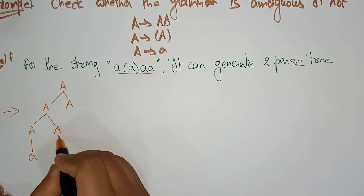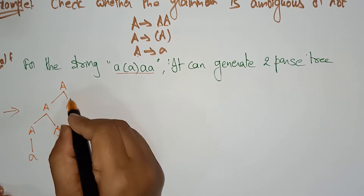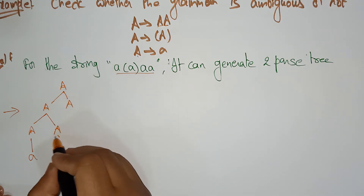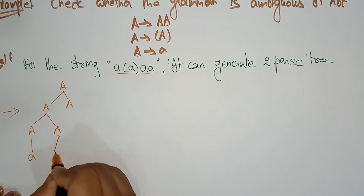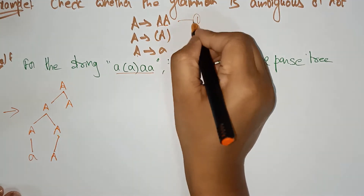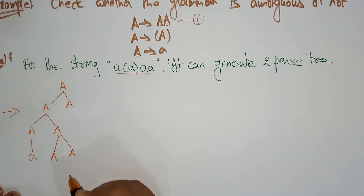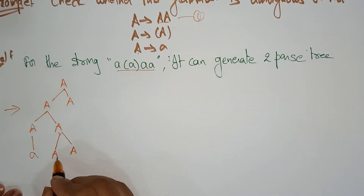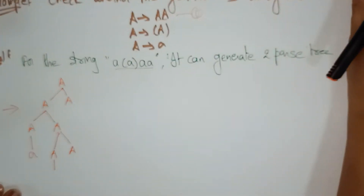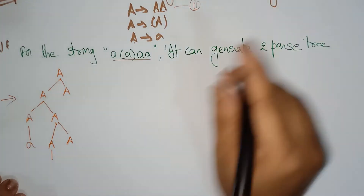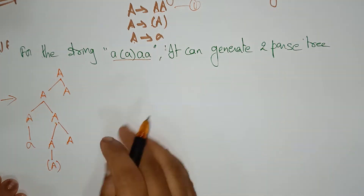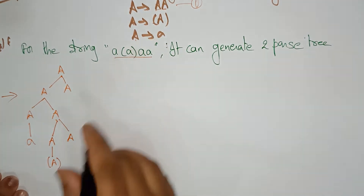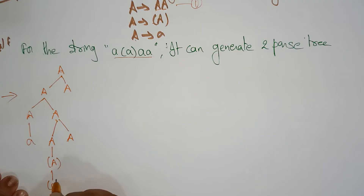Next, moving to the next non-terminal. This A is a non-terminal, so I am replacing A again with the first rule A A. Then in place of this A I am replacing with A within brackets. Finally, in place of A I am writing small a.